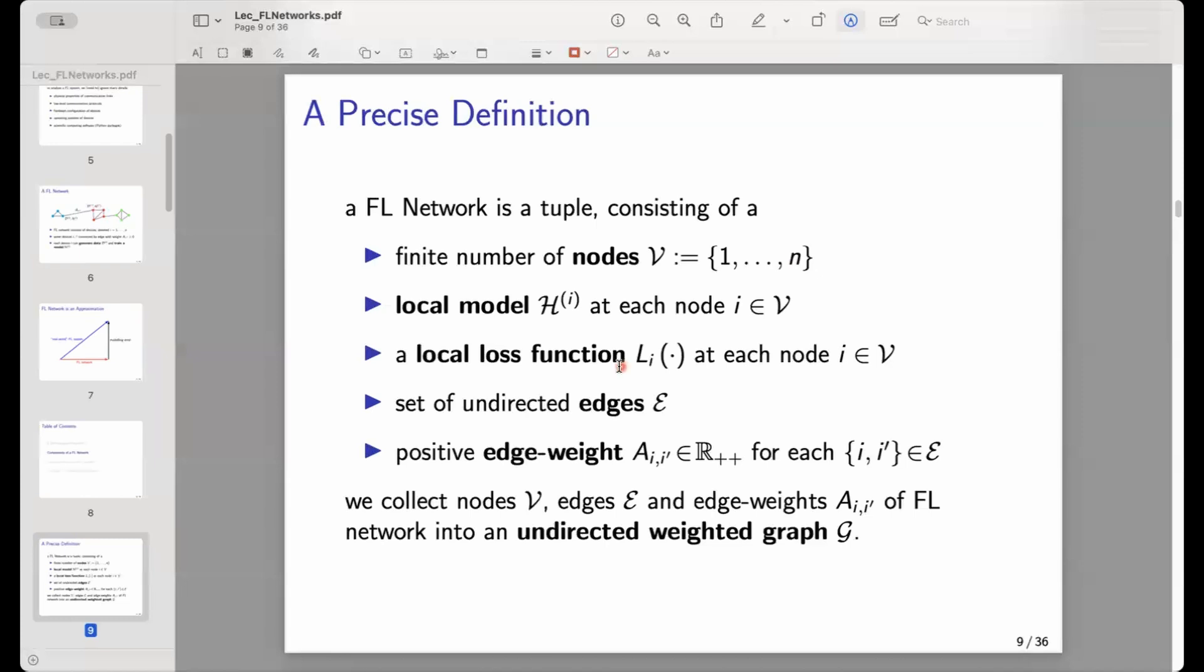Beside these node attributes—we can think of the local model and the local loss function as node attributes—we have undirected edges. So a federated learning network consists also of an undirected graph. Some of these nodes, some of these devices, are connected by an undirected edge.